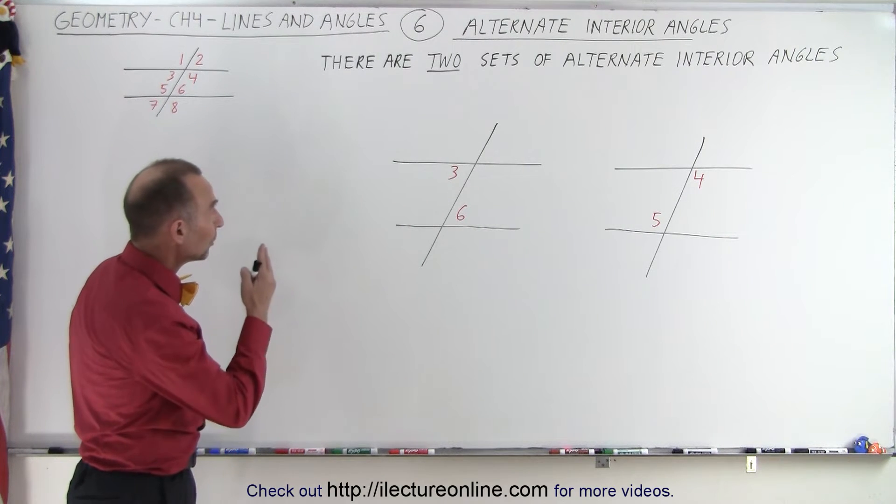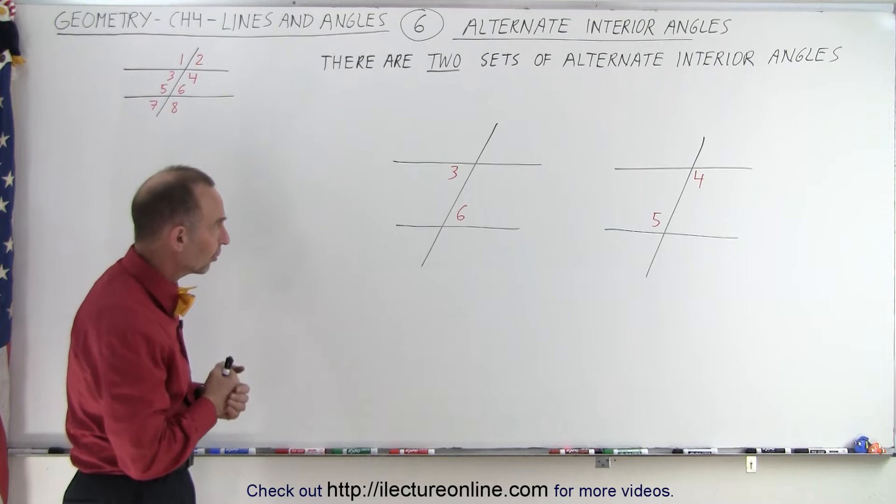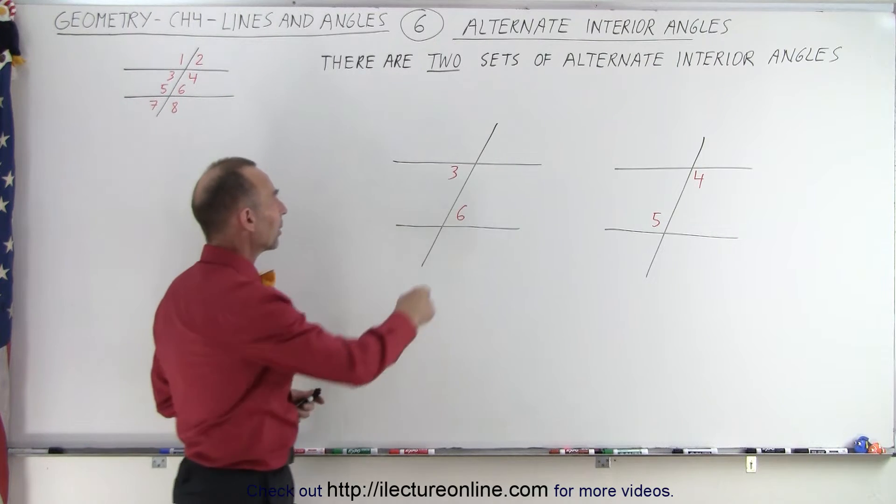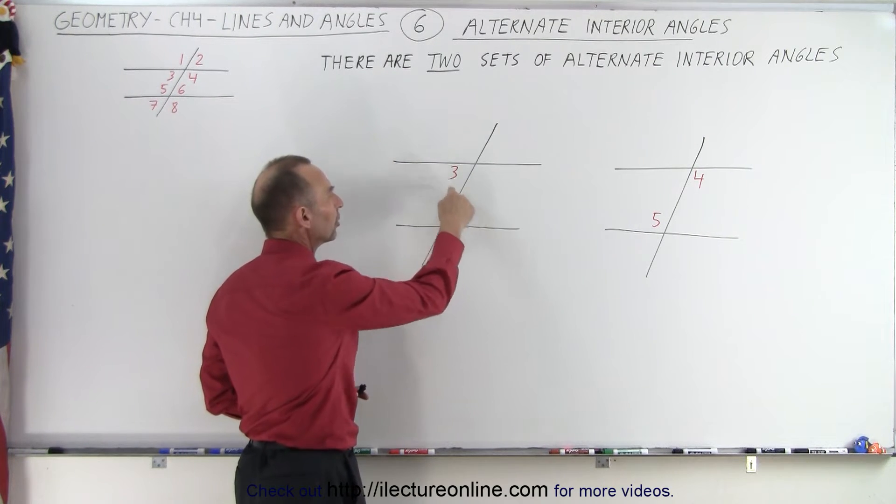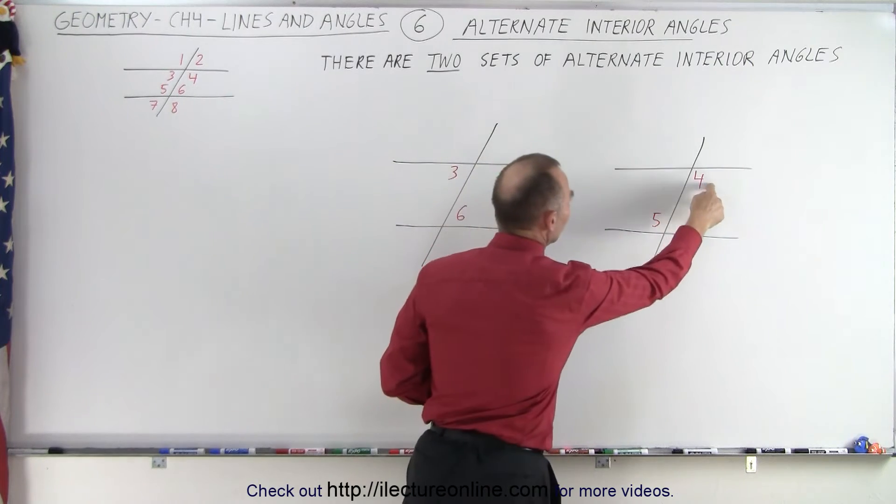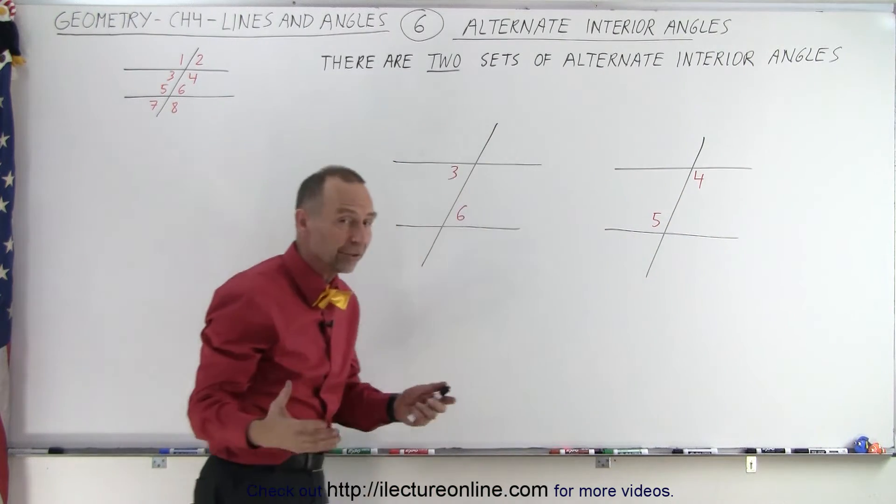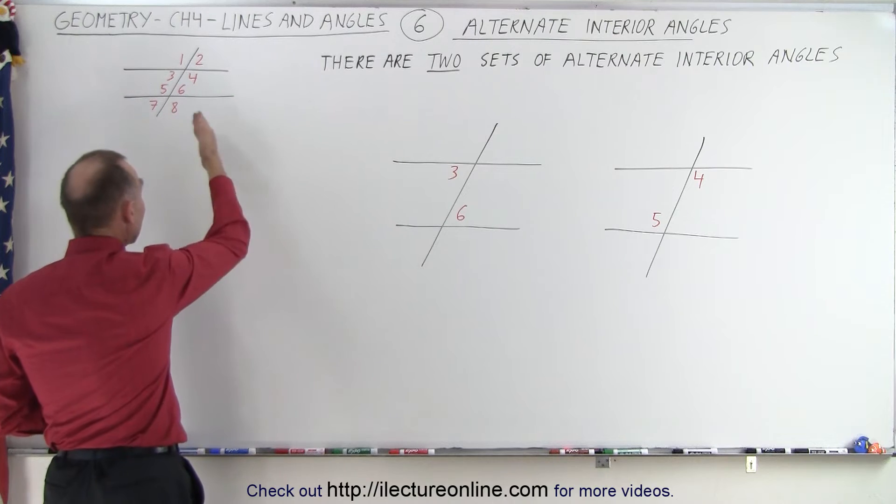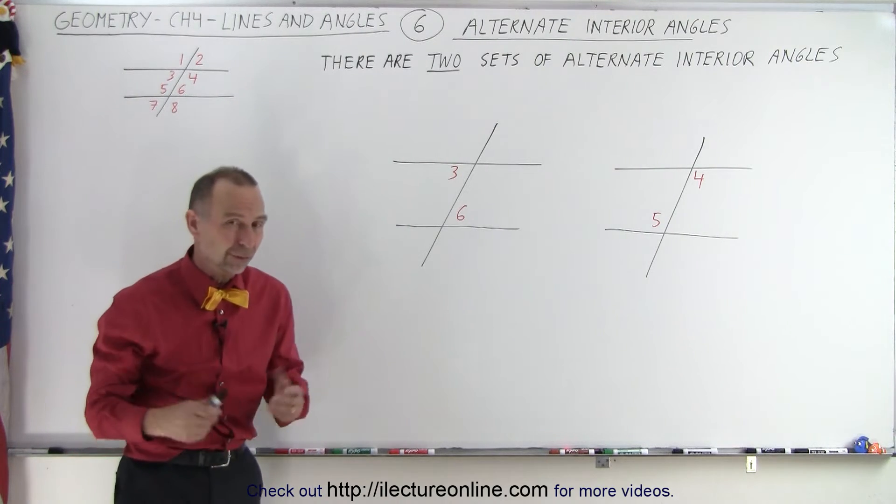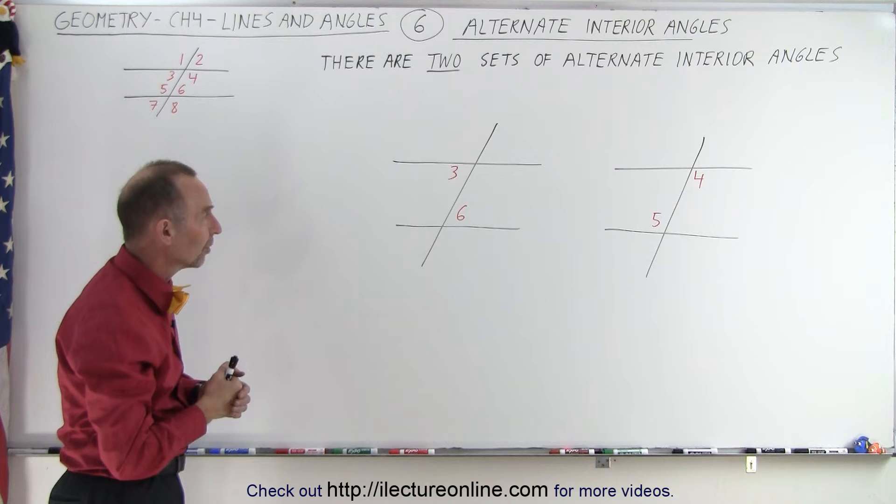Notice there will be two sets of alternate interior angles. In this case, angle 3 and 6 are alternate interior angles, and angles 4 and 5 are alternate interior angles, out of the eight angles that are formed by a transversal when the transversal cuts through two parallel lines.